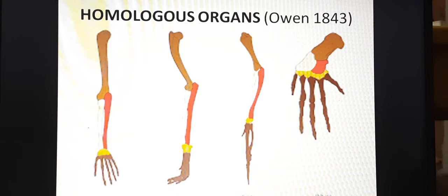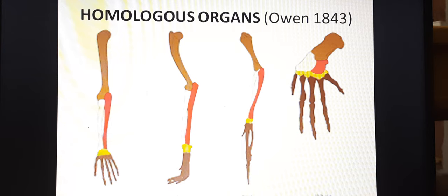Next, very important and always asked in the exam — homologous organs. All of these organs — the forelimb of man, forelimb of dog, forelimb of bird, and forelimb of whale — are morphologically similar. Our hand, the forelimb of dog, the wings of bird, and the paddles of whale are all morphologically similar, but their function is totally different. When morphologically similar and their origin is the same but the function is different, they are called homologous organs. The actual definition: they are organs which have a similar basic pattern, similar internal structure and similar origin, but may have become different externally with different functions.